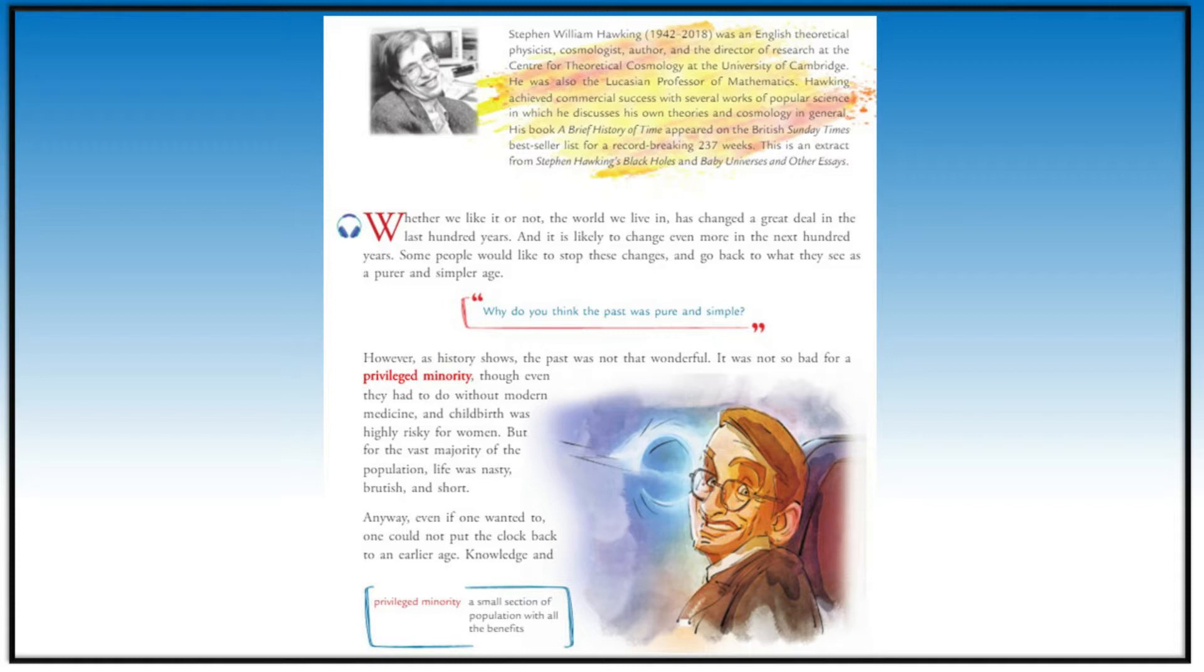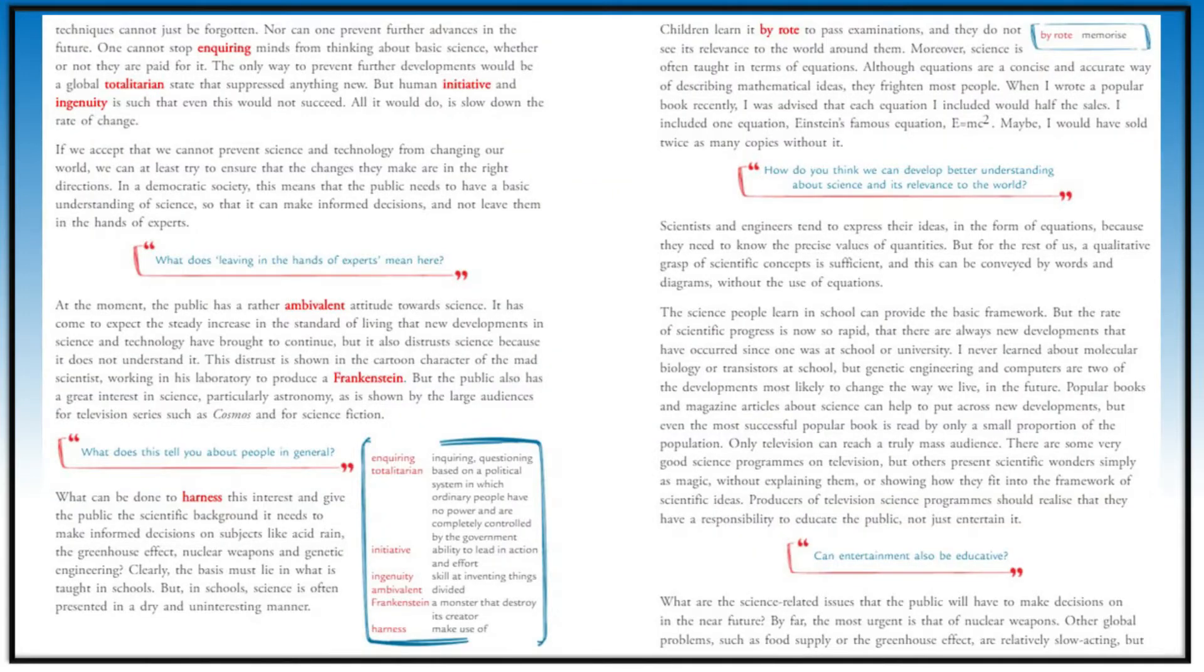And no one can stop further advancement in the future. One cannot stop anyone from thinking and finding new things about science. The only way to stop development is a totalitarian state where only government has power to think or tell about development. But the ability of human beings to find out new things won't let even these succeed.